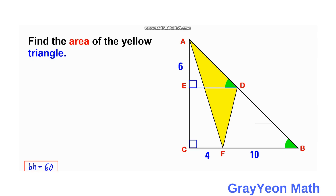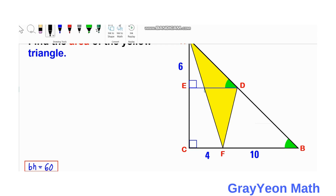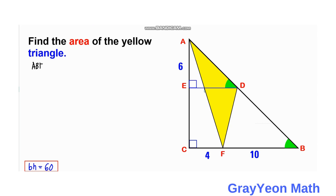For another method, we can consider triangle ABF. We label segment EC as A.